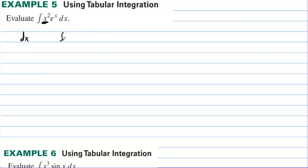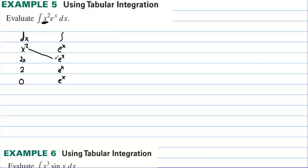We set up two columns: one for derivatives and one for integrals. Starting the derivative column: x², then 2x, then 2, then 0 — we stop at zero. Starting the integral column with eˣ: eˣ, eˣ, eˣ. Then we draw diagonals pairing each derivative-column entry with the next integral-column entry below it.